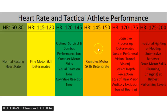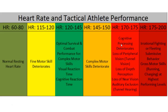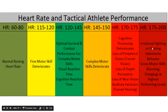Beyond that optimal zone, complex motor skills deteriorate and your efficiency decreases — you can't run as fast and you're less coordinated. As your heart rate gets into the 170–175 range, cognitive processing deteriorates, you lose peripheral vision, experience tunnel vision, and lose depth perception and near vision.